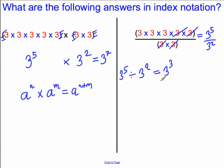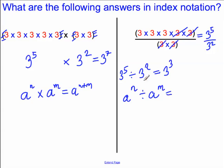Looking here, you can spot what the rule is going to be. If you take any base number and raise it to the power of n, and you divide it by the same base number to the power of m, then what you can do is subtract the indices — a to the power of n minus m.